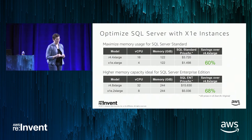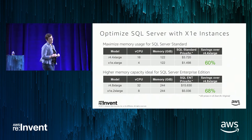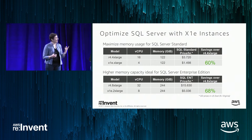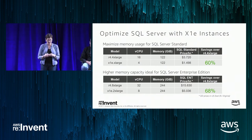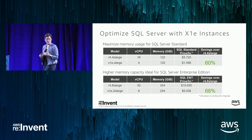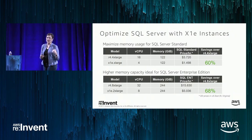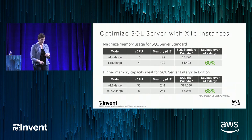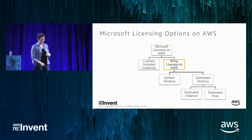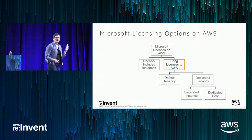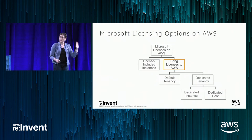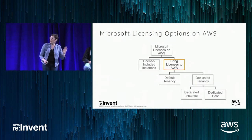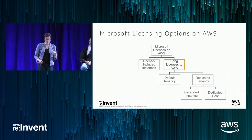For SQL Server Enterprise Edition, if you want 244 gigabytes of memory to the eight vCPU, that's a really nice 68% savings. So I covered license-included and quickly ran through a lot of ways to use that as a new way to save some money. Now we're going to talk about bringing your own licenses.